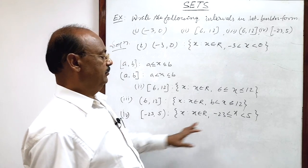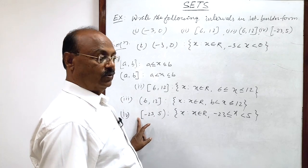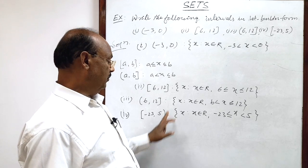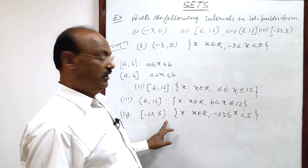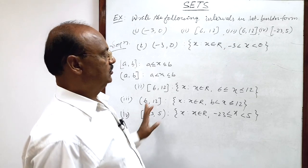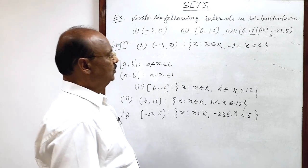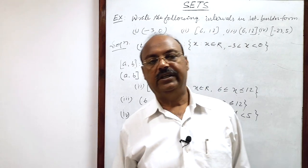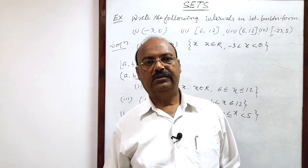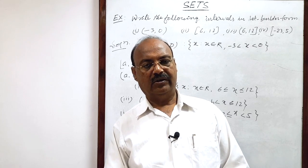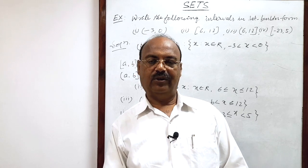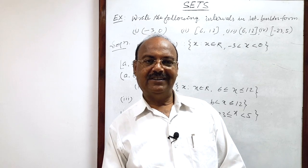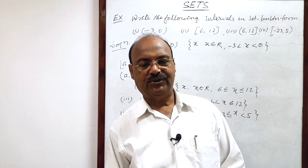Now you have understood it very well: if the equality sign is there, that side interval is closed; if the equality sign is not there, that side is open. For open intervals, we use small brackets, and for closed intervals, we use big brackets. This is the solution of this question. In the next video, we will see some very interesting topics and do some questions based on that. Please keep watching my videos and enjoy learning mathematics. Thank you very much. All the best.